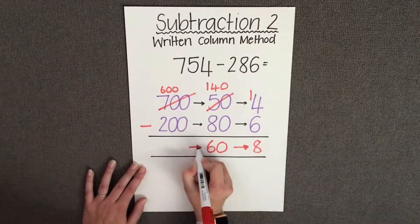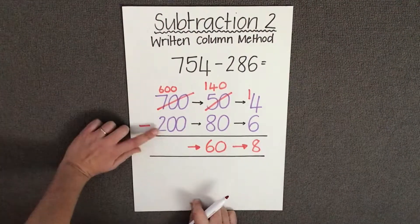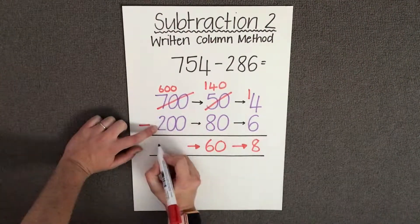And finally subtracting the hundreds. 600 take away 200, which is 400.